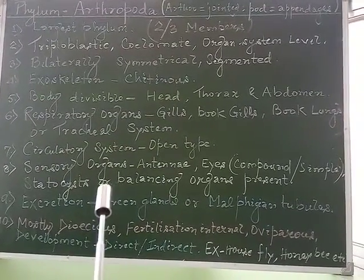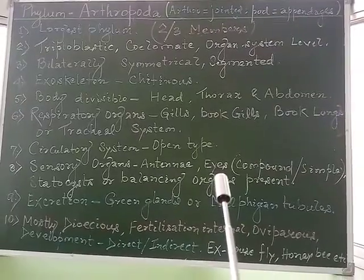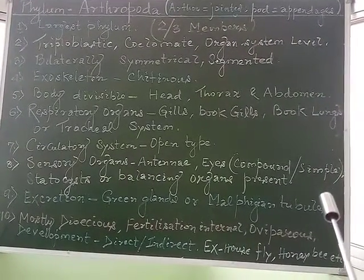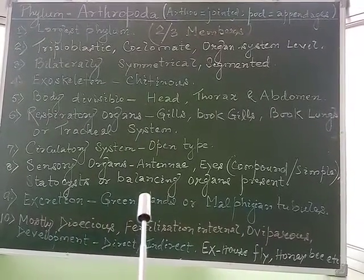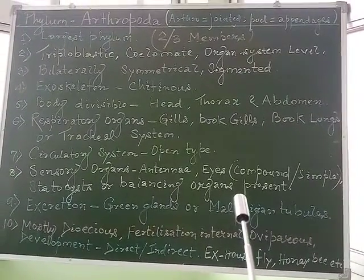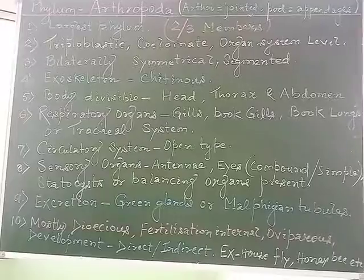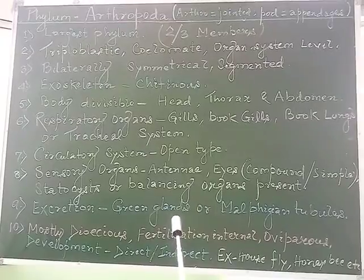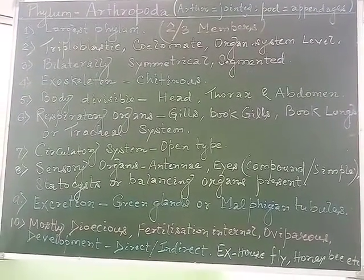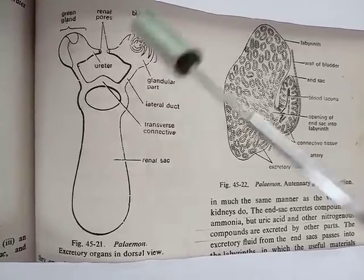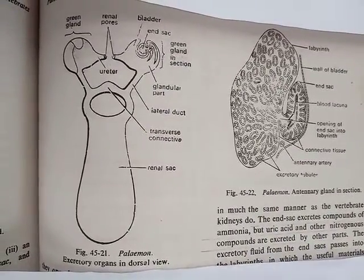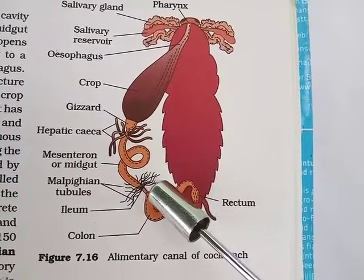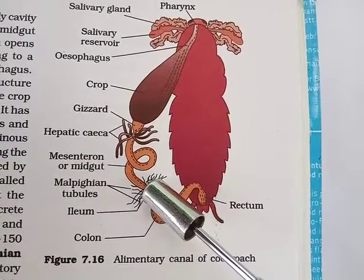Sensory organs are in the form of antennae, eyes (compound or simple), and statocysts or balancing organs. Excretion takes place with the help of green glands or Malpighian tubules. Prawns have green glands for excretion, whereas cockroaches have Malpighian tubules for excretion.